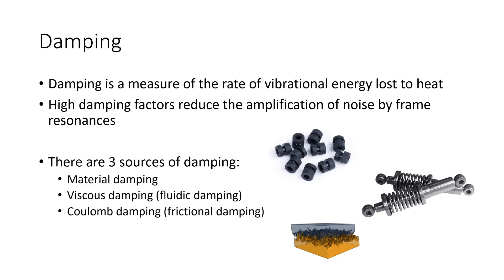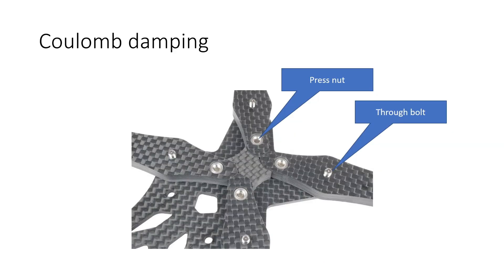And so that leaves us with Coulomb damping, otherwise known as frictional damping. And this is where you dissipate energy by having surfaces rubbing over each other. And as those surfaces rub over each other, they create heat by friction. And that heat is vibrational energy being lost, being dissipated. Now, it turns out for the Impulse RC Apex that Coulomb damping is really, really important, I believe, for its vibrational performance.